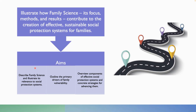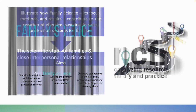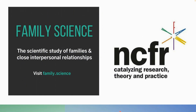In order to achieve that, I've really got three primary aims. The first is to describe what family science is and illustrate its relevance to designing and implementing effective social protection systems. Then I want to outline some of the primary drivers of vulnerability among families, because we have to know what makes families vulnerable before we can come up with solutions. And lastly, I hope to overview components of effective social protection systems and give some concrete strategies for advancing them. So let's begin with talking about what family science is.